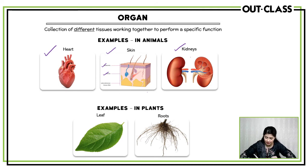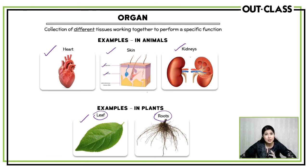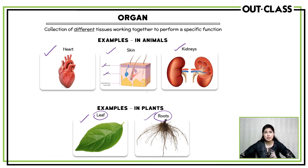In plants, what are the examples of organs? The leaf — a leaf contains many tissues: mesophyll tissue and epidermal tissue together form the leaf, so the leaf is an organ. Then there are roots — roots have root hair cells, root cortex cells and phloem cells, so many different things together making up the root, which is one organ.